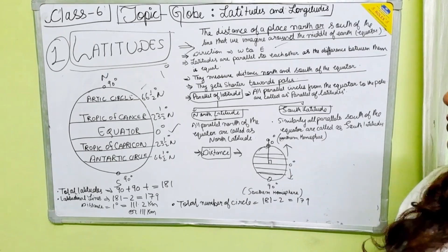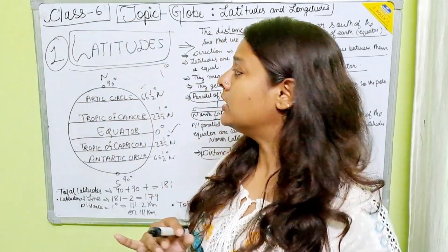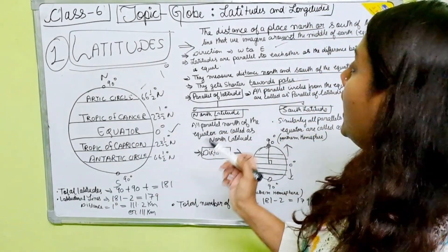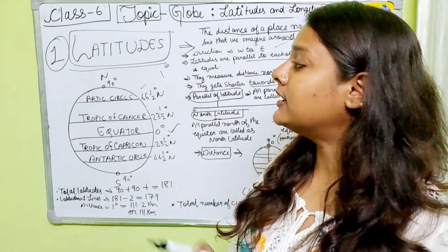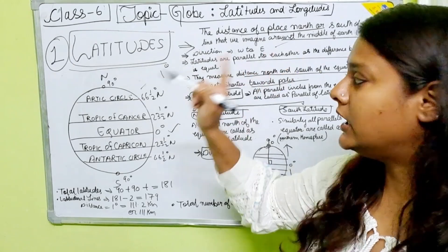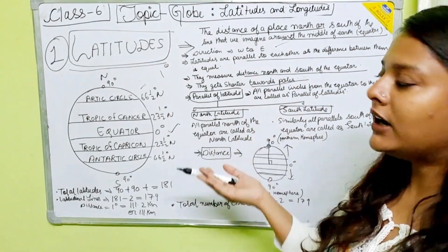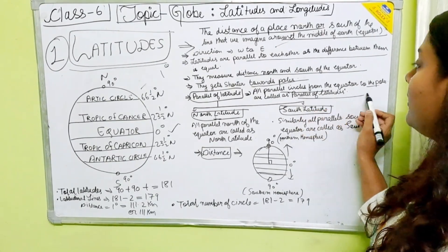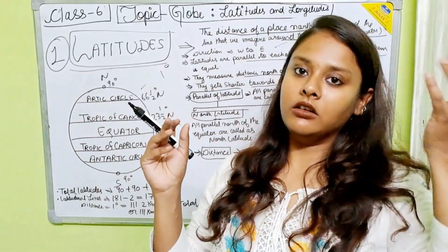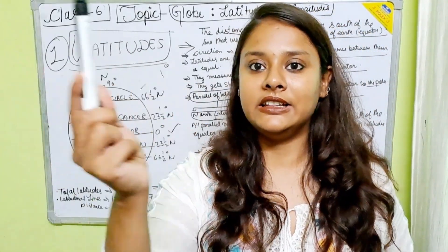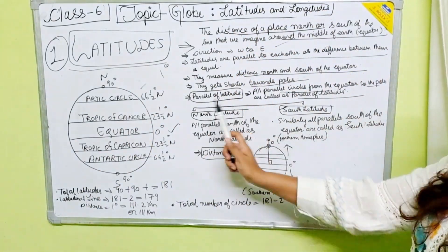Parallels of latitude: all parallel circles from the equator to the pole are called parallels of latitudes. These latitudes form circles — when we see the entire Earth, the latitudes keep on forming circles and they are known as parallels of latitudes. There are two types: north latitudes — all parallels north of the equator — and south latitudes — all parallels south of the equator.